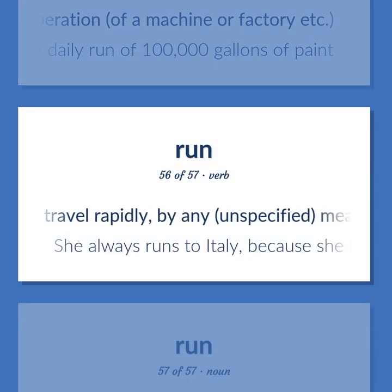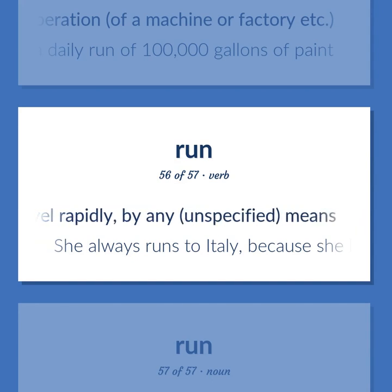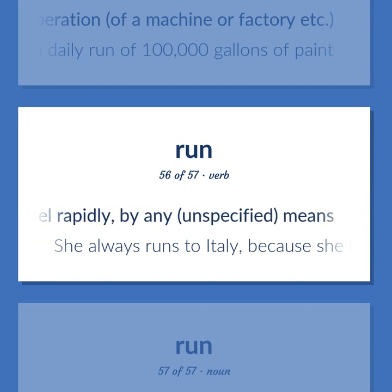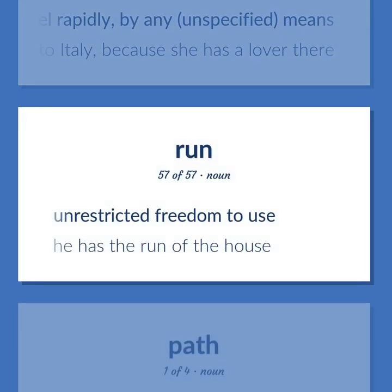Travel rapidly by any unspecified means. She always runs to Italy because she has a lover there. Unrestricted freedom to use. He has the run of the house.